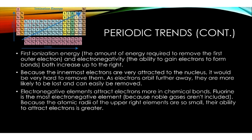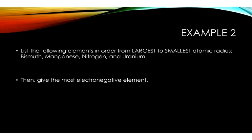First, ionization energy, which is the amount of energy required to remove the first outer electron, and electronegativity, which is the ability to gain electrons to form bonds, both increase up and to the right. Because the innermost electrons are very attracted to the nucleus, it would be very hard to remove them. As electrons orbit further away, they're more likely to be lost and could be easily removed. As we mentioned shielding beforehand, if I have 17 different electrons orbiting around the center before I get to a certain electron in the outer ring, then it's going to be easier to take that away, because it's going to have moments where it's weakening the bond. Electronegative elements attract electrons more in chemical bonds. Fluorine is the most electronegative element, because the noble gases aren't included. Because the atomic radii of the upper right elements are so small, their ability to attract electrons is greater. So if I have fluorine and chlorine in a container, it's most likely that the fluorine is going to take in more, because it wants to gain electrons more.